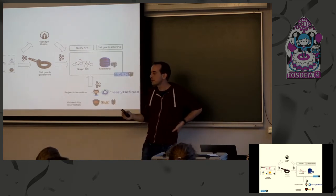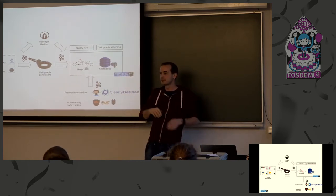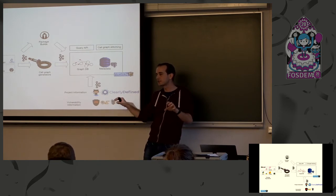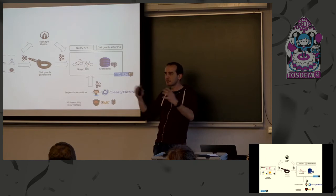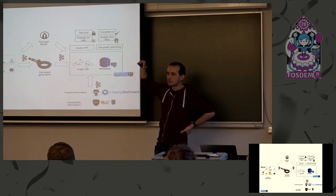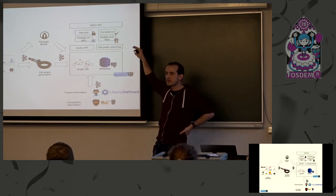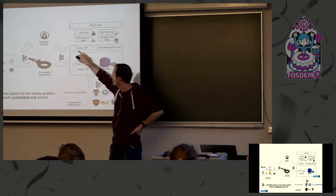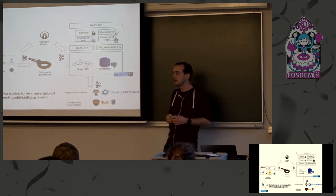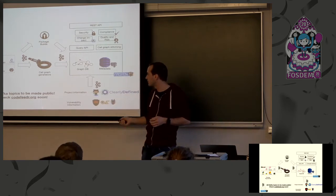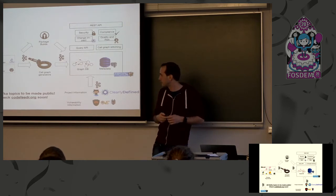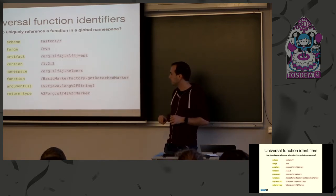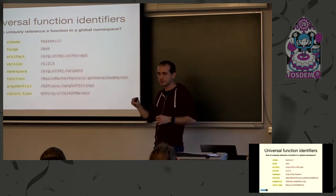On top of our two databases we have a custom query layer that allows combining data from both. For example, if you want a call graph for five dependencies, you provide a dependency tree, it retrieves individual call graphs for each package, and stitches them together into a global call graph. The analysis sits on top of the query layer, and there is a REST API that allows package managers to get information from all those sources. The streaming source will be available to the public in a couple of months. The node in our project is a function — we identify functions uniquely using a custom protocol with a grammar to validate those URLs.